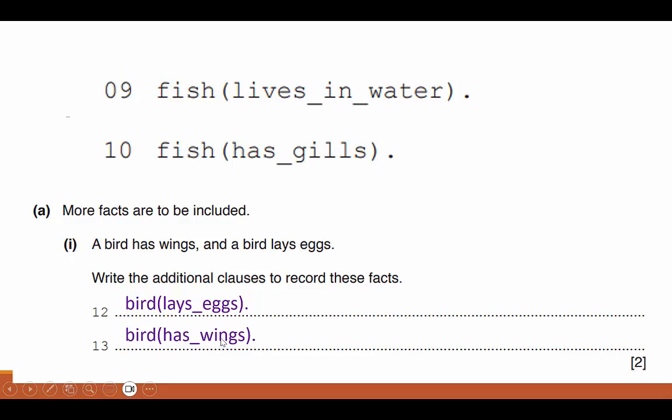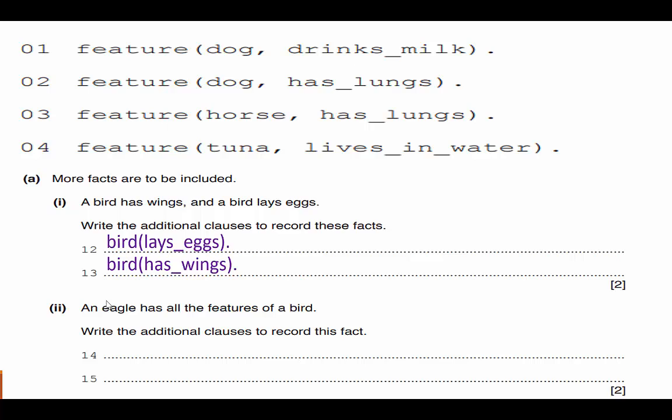Notice there are no spaces. There are no capital letters. Capital letters represent a variable. So if I put a capital B at the beginning of bird, it's not going to show that as a fact. It's going to show that as a variable or a goal. Let's move on and continue.